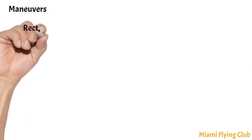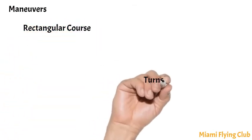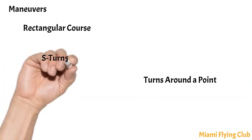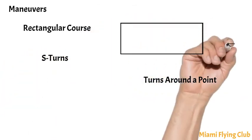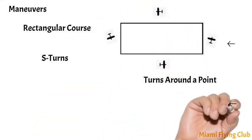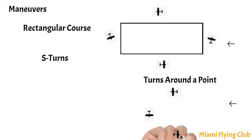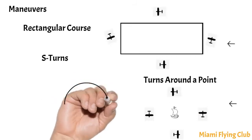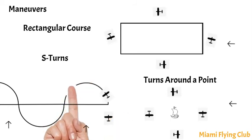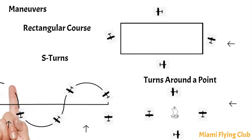Maneuvers: rectangular course, turns around a point, S-turns. The four flight fundamentals involved in maneuvering an aircraft are straight and level flight, turns, climb, and descents. All ground reference maneuvers assist the pilot in practicing the following: maintaining a specific relationship between the airplane and the ground; dividing attention between the flight path, ground-based references, manipulating the flight controls, and scanning for outside hazards and instrument indications; adjusting the bank angle during a turn to correct for ground speed changes; and establishing and correcting the wind correction angle to compensate for any drift caused by the wind.